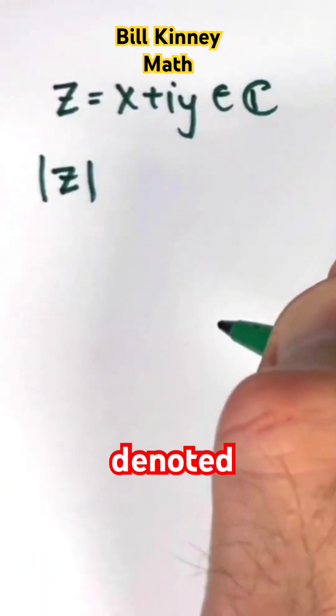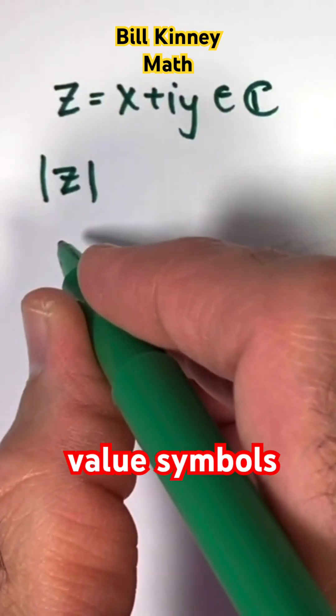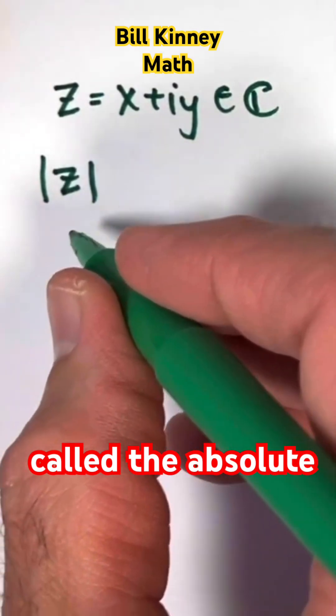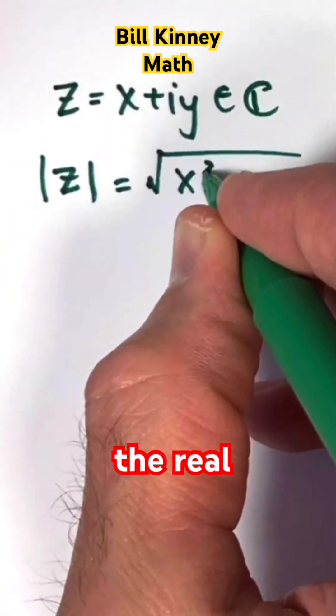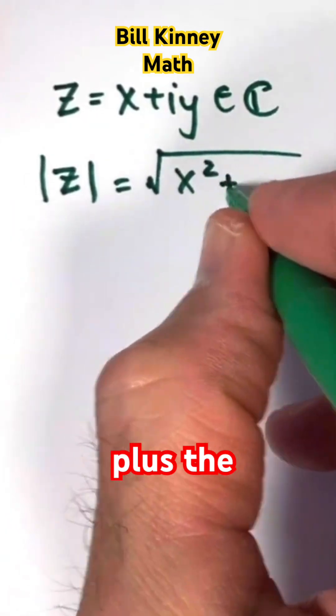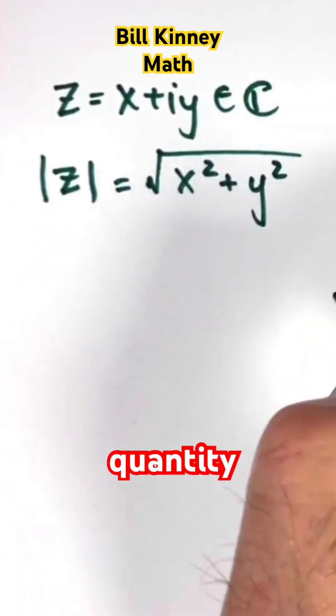Modulus of z, denoted by the absolute value symbols, and it's also sometimes called the absolute value of z, is the square root of the real part x quantity squared, plus the imaginary part y quantity squared.